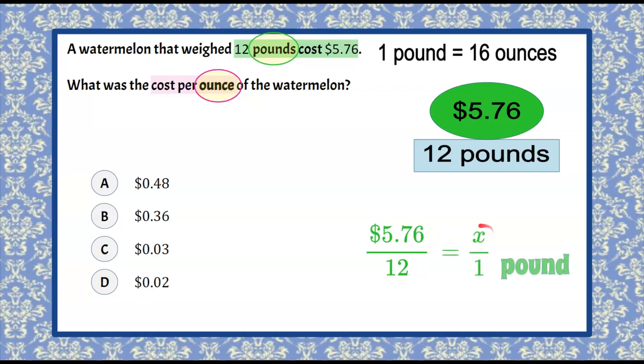And we want to know how much it costs for one pound, and then we're going to convert that to ounces. So when we do this, we can see that 12 to 1 is divided by 12. 12 divided by 12 is 1. So whatever we do to the bottom part of the ratio, we must do to the numerator. So $5.76 divided by 12 on your calculator will come out to be 48 cents per pound.